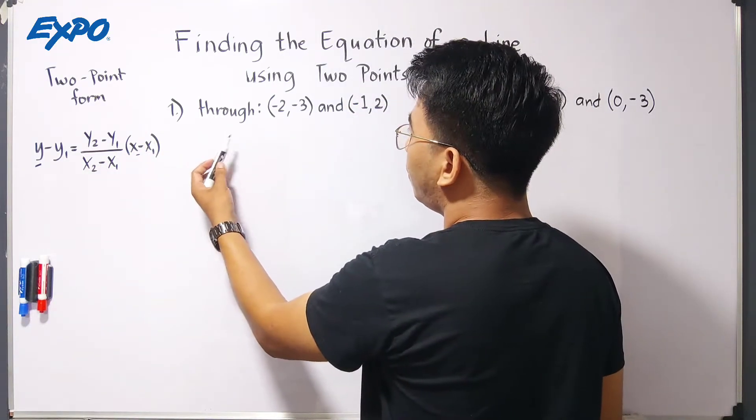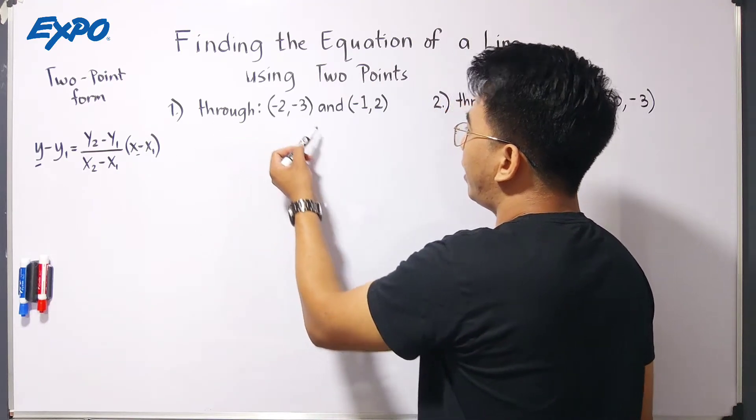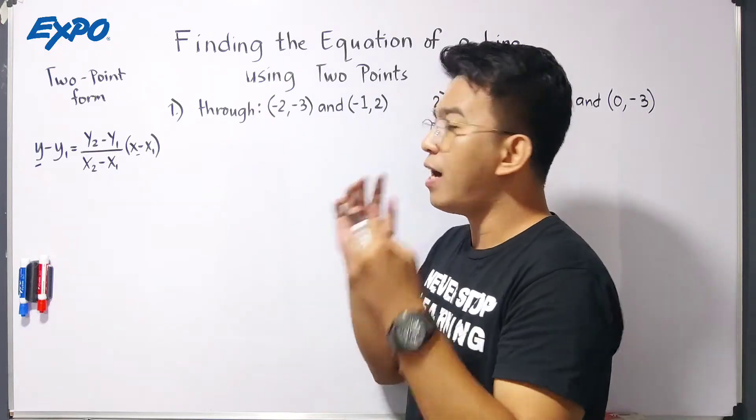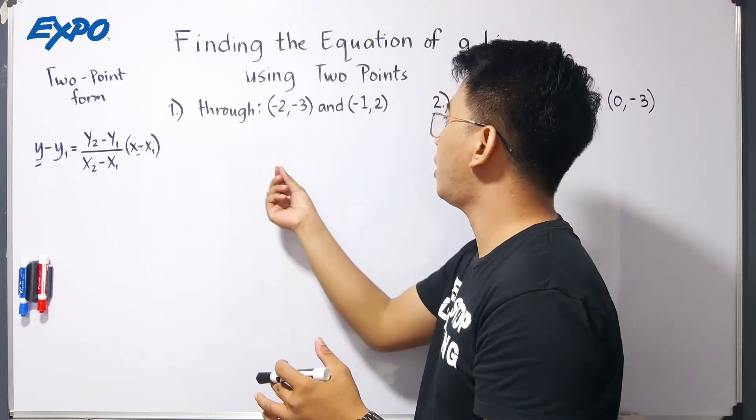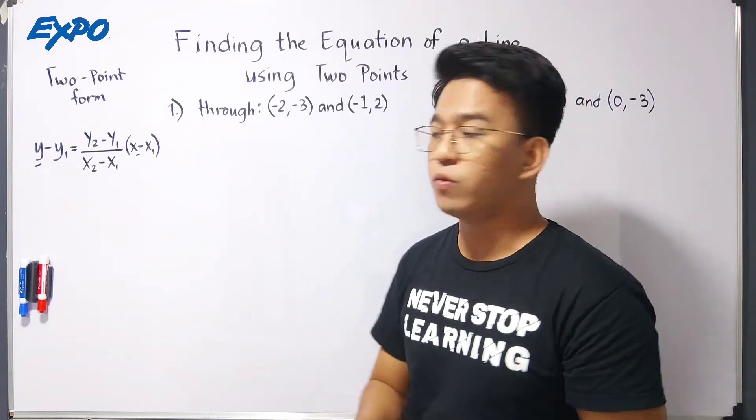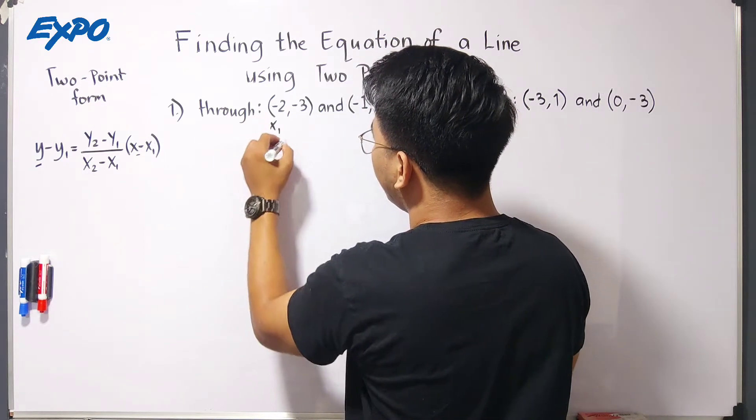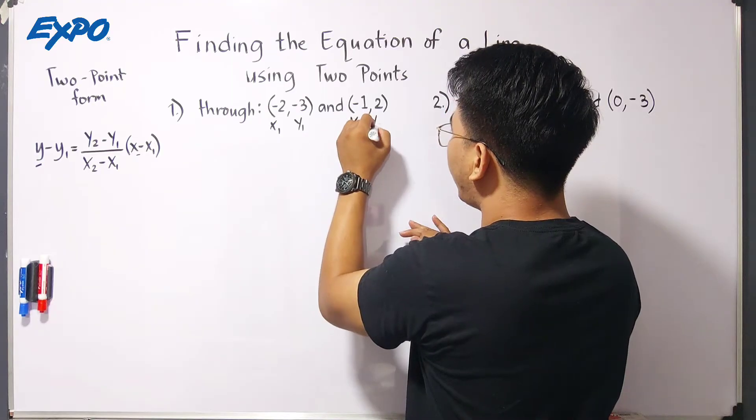Number one, we will find the equation of the line through negative 2, negative 3, and negative 1, 2. This means the equation of the line we're finding passes through points negative 2, negative 3 and negative 1, 2. We will label this one as x sub 1, then y sub 1. This is your x sub 2, then y sub 2.